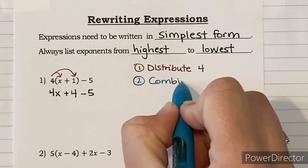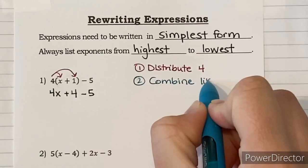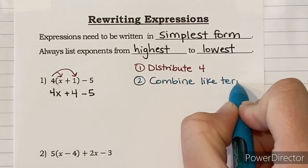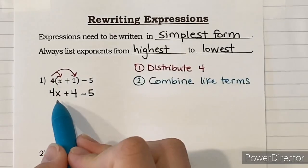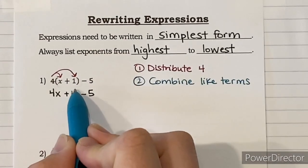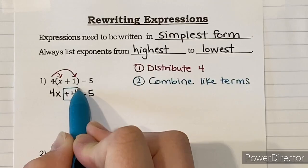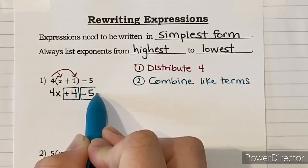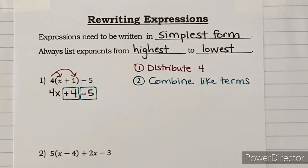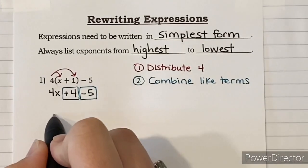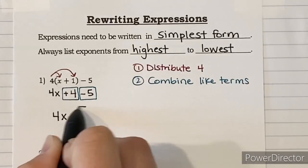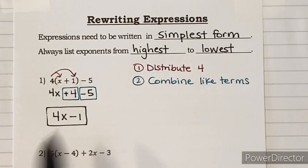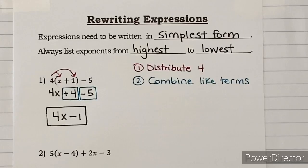Step two is to combine like terms. Looking at our expression, 4x can't combine with anything, but I have positive four and minus five — those are both constants and can be combined. So I bring down 4x, and four minus five is just minus one. That gives us 4x - 1, which is our simplest form.